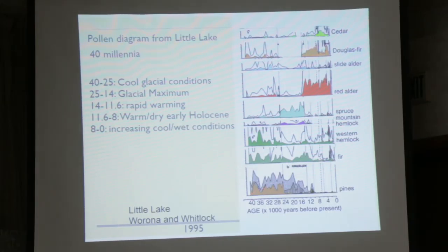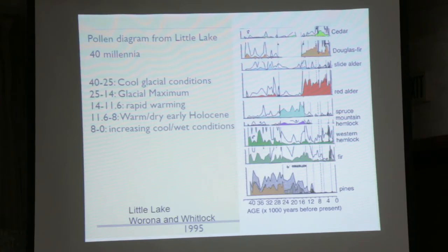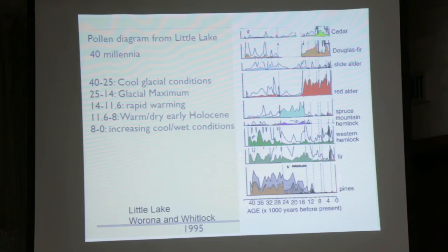This is a 40,000-year record out of Little Lake, which is right off here. This is an unusual kind of site — across North America there aren't many places like this that go back so far in time as the Triangle Lake landslide area. This is a study by Verona and Whitlock, and we're still redoing parts of it. You can see huge changes through time — look at red alder abundance from 40,000 years ago on the left to present on the right. There are time periods when red alder isn't that common, virtually absent, and then in the last 14,000 years red alder is very common.